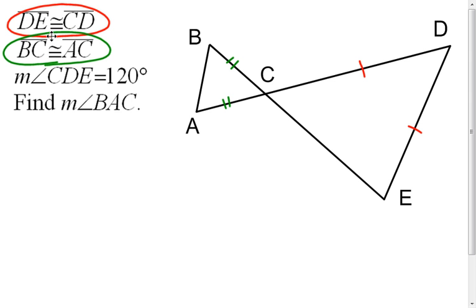And we also know the measure of angle CDE is 120 degrees. That would be this angle up here. And then ultimately we want to find the measure of angle BAC. It should be this angle right here.